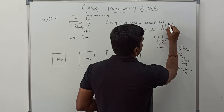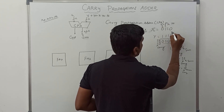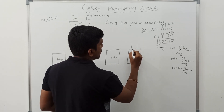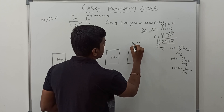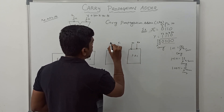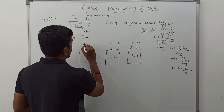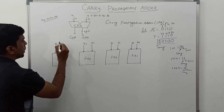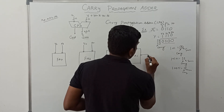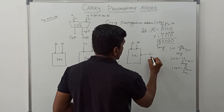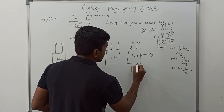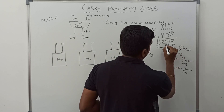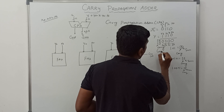Now assign the input values for each full adder circuit. Full adder 1 takes inputs x0 and y0; full adder 2 takes x1 and y1; full adder 3 takes x2 and y2; full adder 4 takes x3 and y3. Each full adder circuit generates two outputs: one is sum (S0, S1, S2, S3) and the other is carry out.